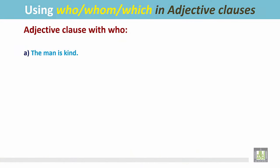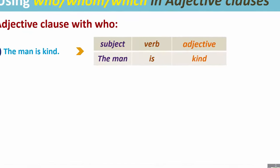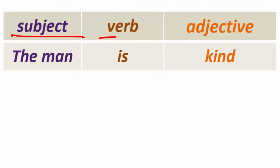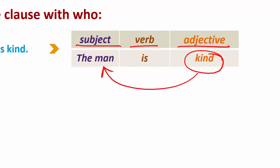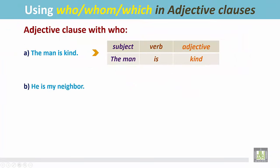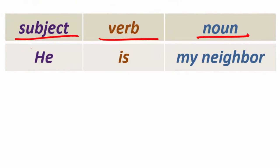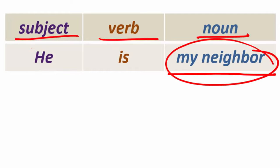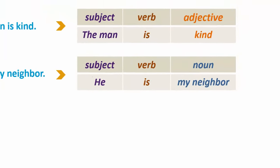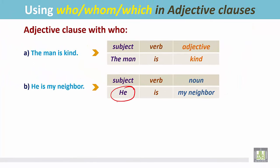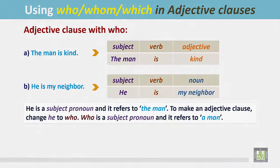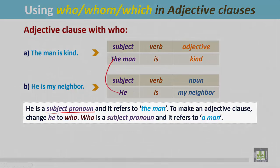See other examples. 'The man is kind.' The sentence is structured this way: subject, verb, and adjective. 'Kind' is an adjective and it modifies the subject. 'He is my neighbor' — subject, verb, and noun. 'My neighbor' is simply a noun, not an adjective. In these two sentences, 'he' is the same person as 'the man.' 'He' is a subject pronoun referring to 'the man.' To make an adjective clause, change 'he' to 'who.' 'Who' is a subject pronoun and it refers to 'the man.'